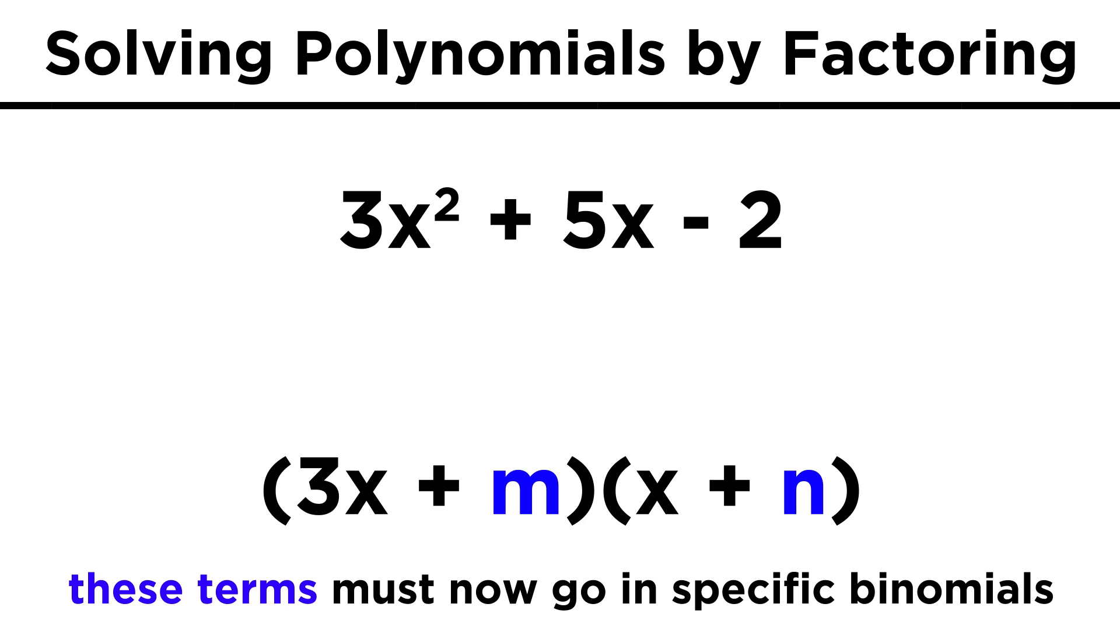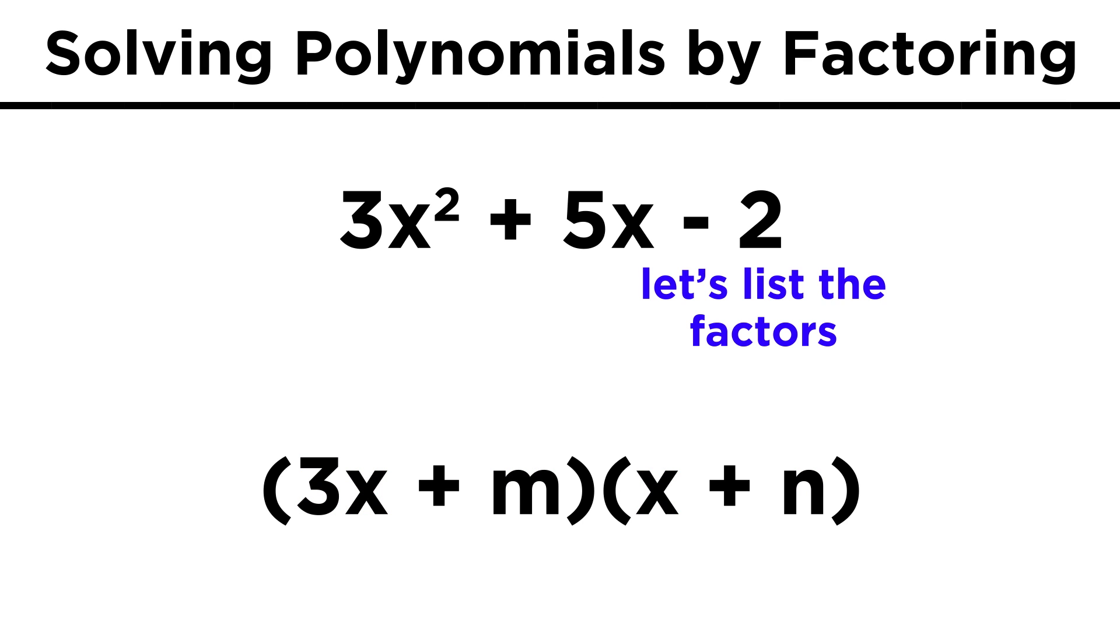Now that also means that it is not arbitrary which other number goes where, because one will multiply by 3x, and the other by x. Nevertheless, let's get our factors and see what happens.